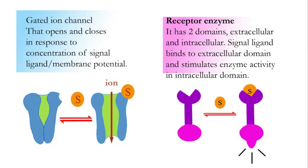Gated ion channel — as the name indicates, it acts as a gate. It opens and closes in response to a signal or membrane potential. Membrane potential means the charge across the plasma membrane, whether it is positive or negative. Initially, the receptor is in closed condition. When a signal arrives, it binds to the receptor and the channel opens, allowing ions to move inward. Receptor enzyme has two domains: extracellular domain and intracellular domain. The signal ligand binds to the extracellular domain and stimulates the enzyme activity at the intracellular domain.